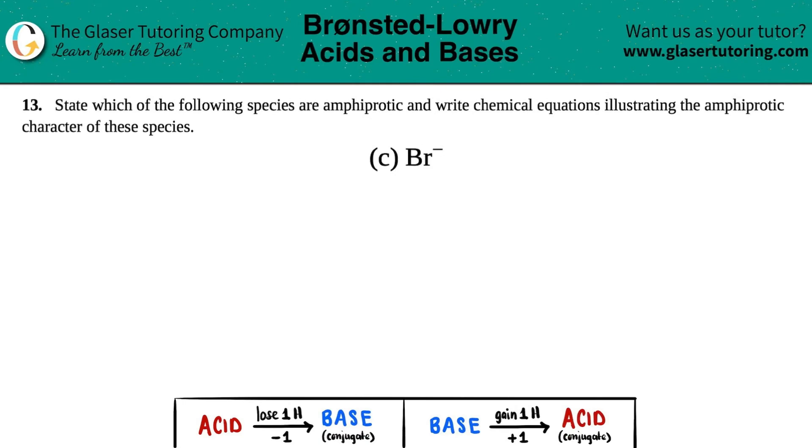Number 13. State which of the following species are amphiprotic and write chemical equations illustrating the amphiprotic character of these species. And then we have letter C. So the question is, is Br minus amphiprotic?